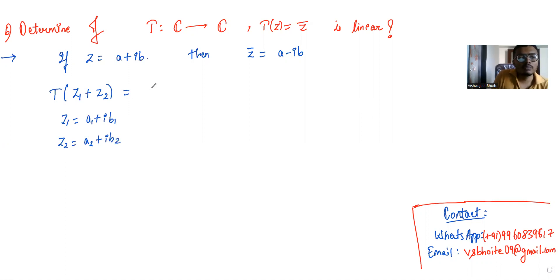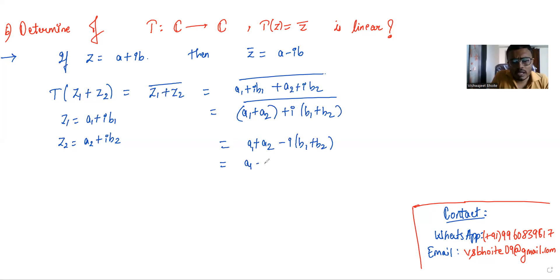T of z1 plus z2 is basically z1 plus z2 bar, which is a1 plus ib1 plus a2 plus ib2 bar, which is nothing but a1 plus a2 plus i times b1 plus b2, all conjugated, which is a1 plus a2 minus i times b1 plus b2, which is the same as T of z1 plus T of z2.